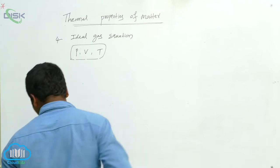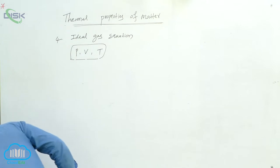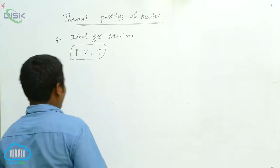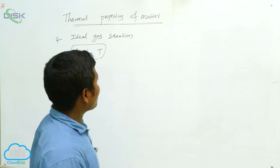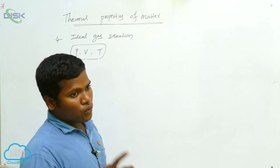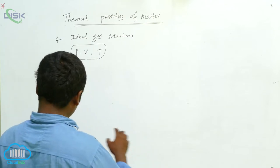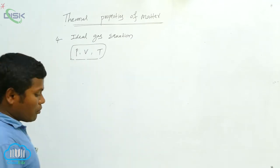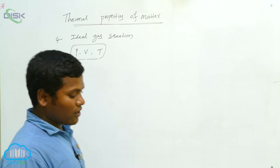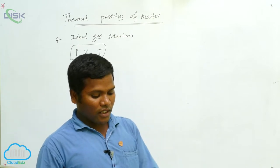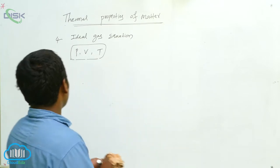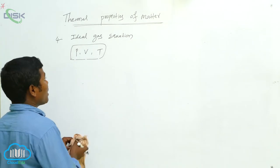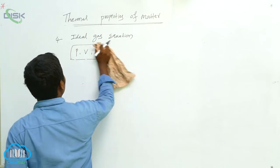Now, before deriving the ideal gas equation, we have some laws. In the thermal properties of matter, we study two laws: the first is Boyle's law and the next is Charles's law. You might have studied these laws in ninth class.